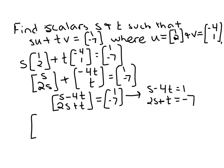So the augmented matrix corresponding to this system of linear equations would be [1, -4 | 1], and then the second row would be [2, 1 | -7].